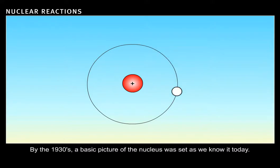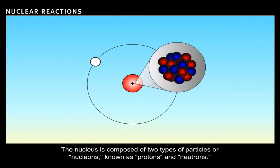By the 1930s, a basic picture of the nucleus was set as we know it today. The nucleus is composed of two types of particles, or nucleons, known as protons and neutrons.